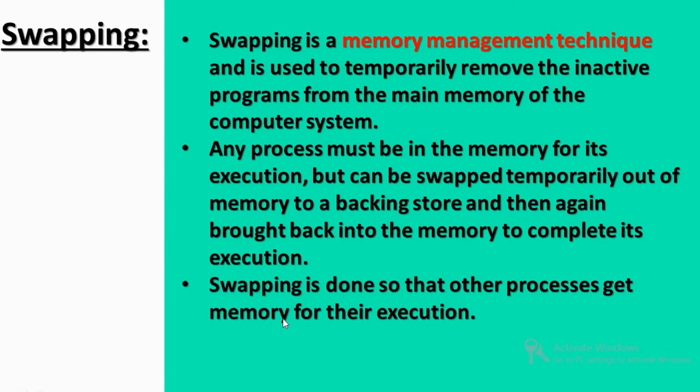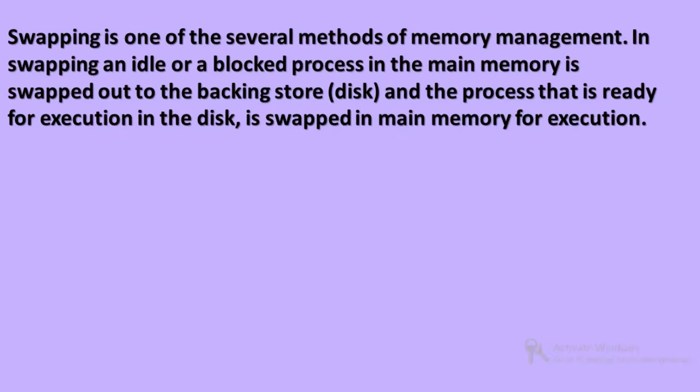Swapping is done so that other processes get memory for execution. If current main memory inactive programs are removed or swapped out, swapping is one of the several methods of memory management. An idle or blocked process in the main memory is swapped out to the backing store. In case one process in the main memory is idle or inactive, we move it to secondary memory.